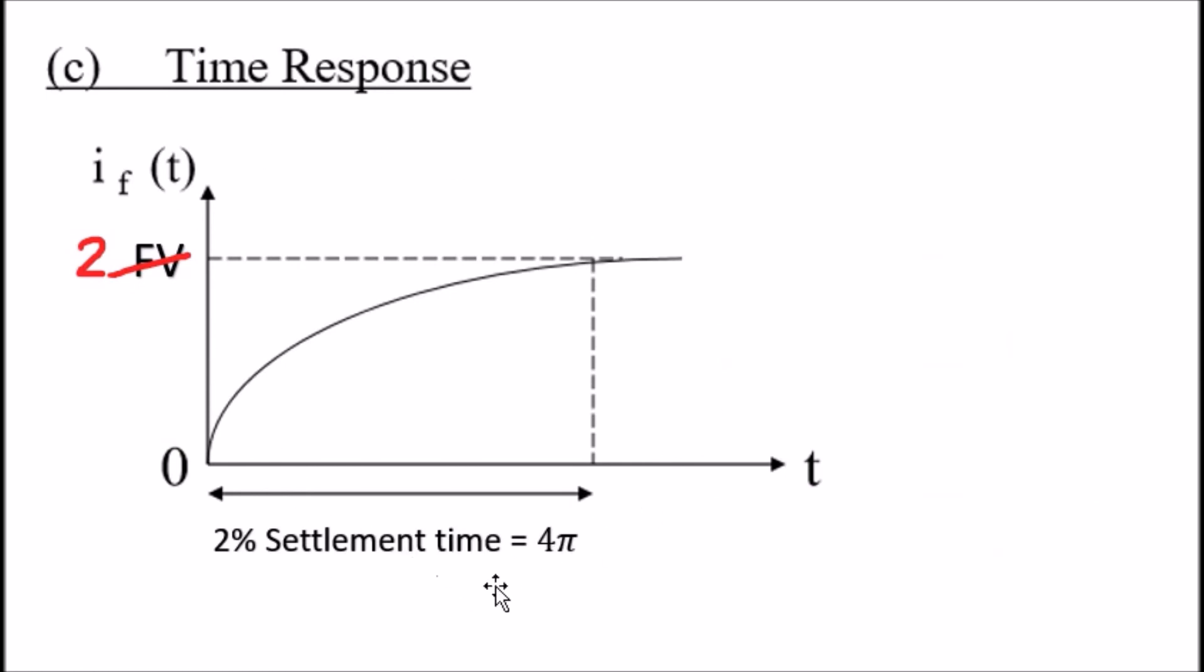That's it guys. Oh actually, I'm not done yet - the time response settlement time. The settlement time is 4 tau, and we know tau was 0.1, so we can clearly say the settlement time is going to be 0.4. And voila, that's it.